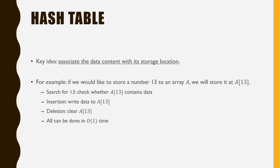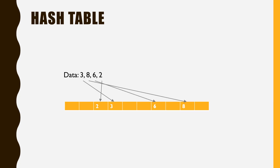The key idea of hash table is to associate the data content with its storage location. For example, when storing a number 13 to a vector a, we can simply store the number at the 13th position in the vector a. This naive approach does enable all search, insert, and delete operations in constant time. This is a toy example that illustrates this naive approach.